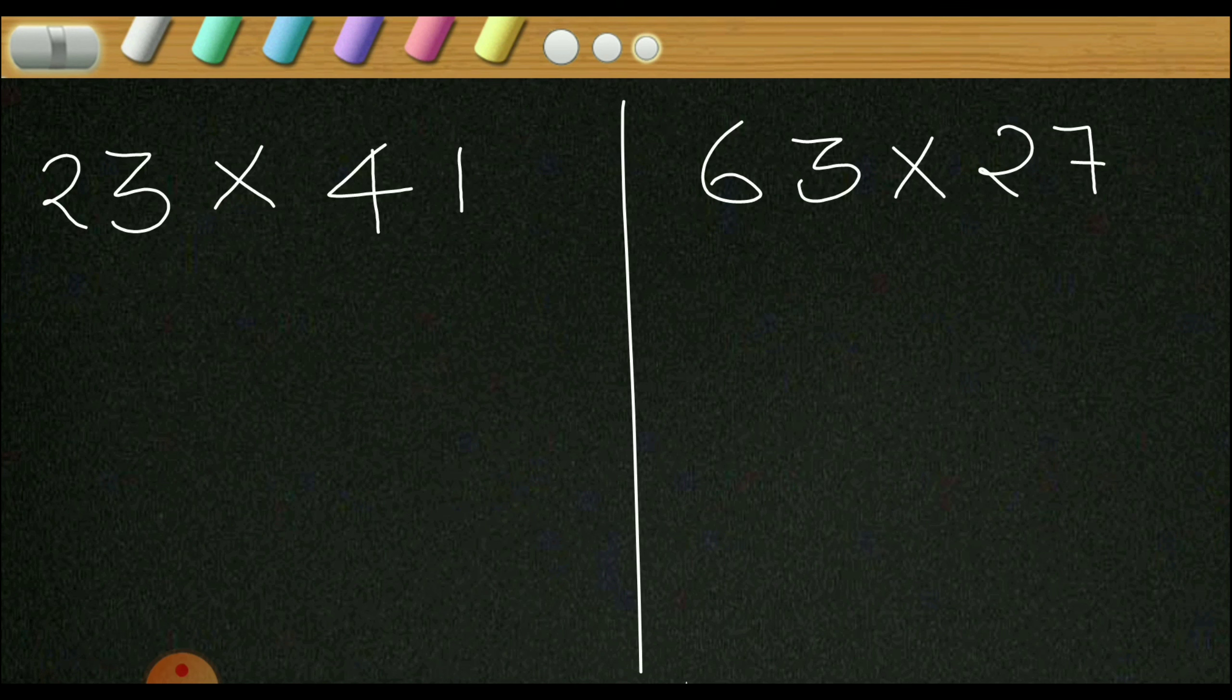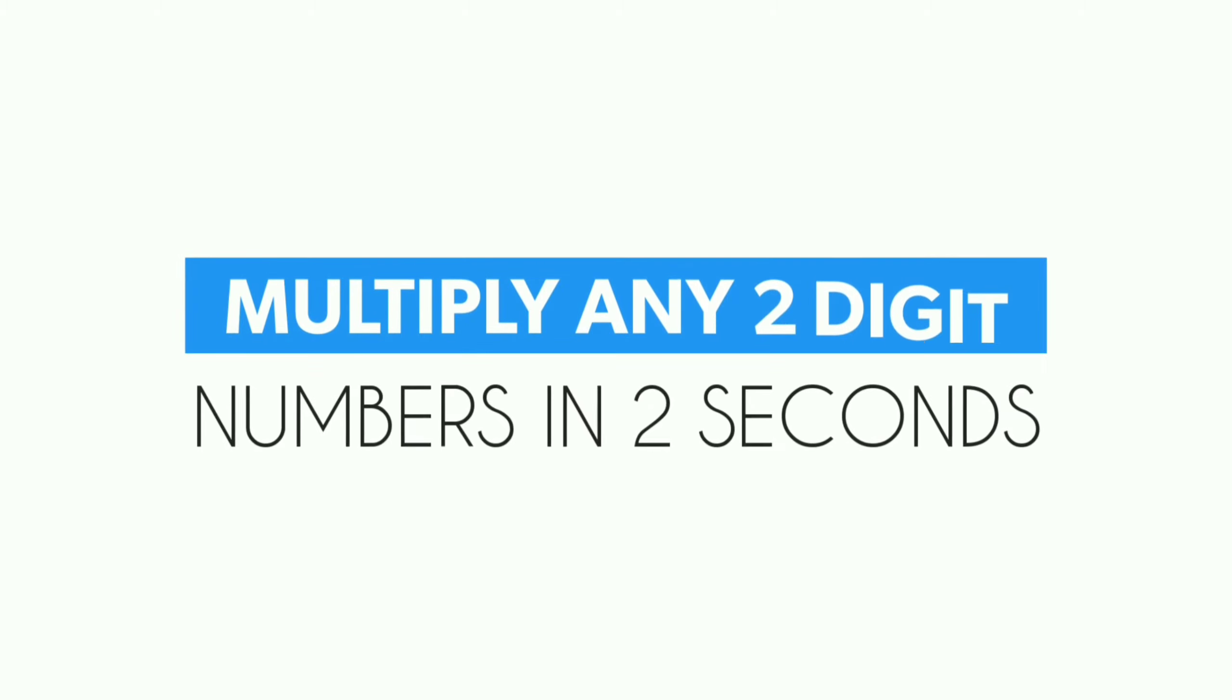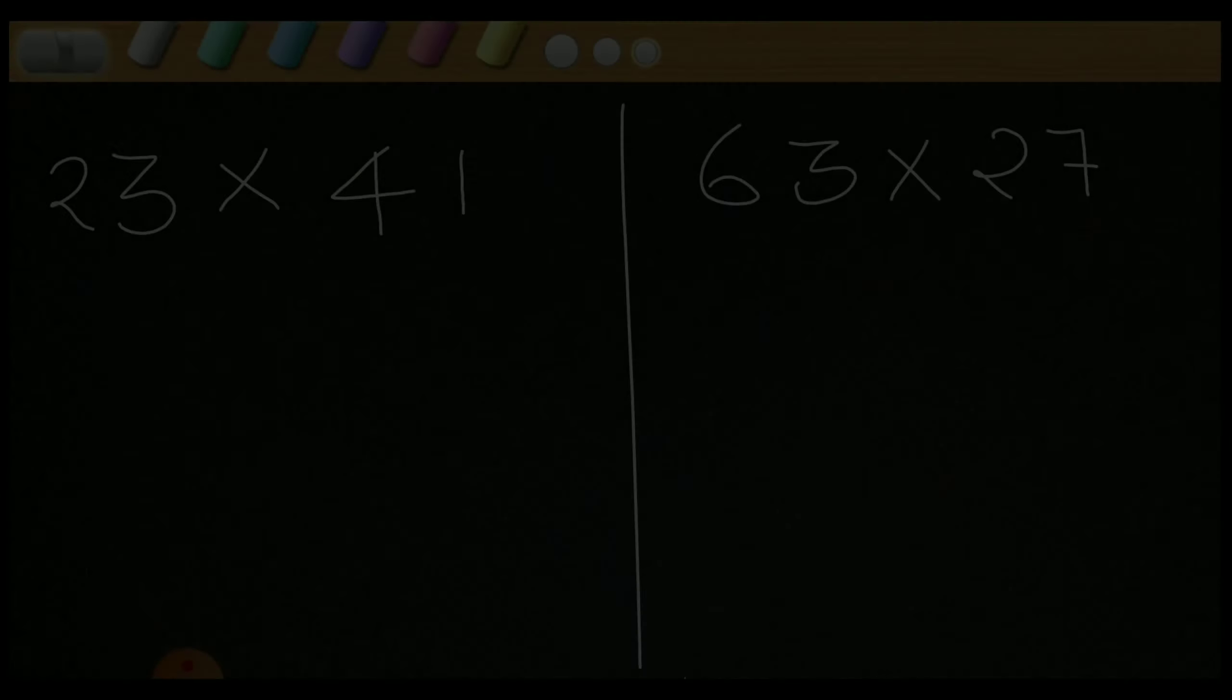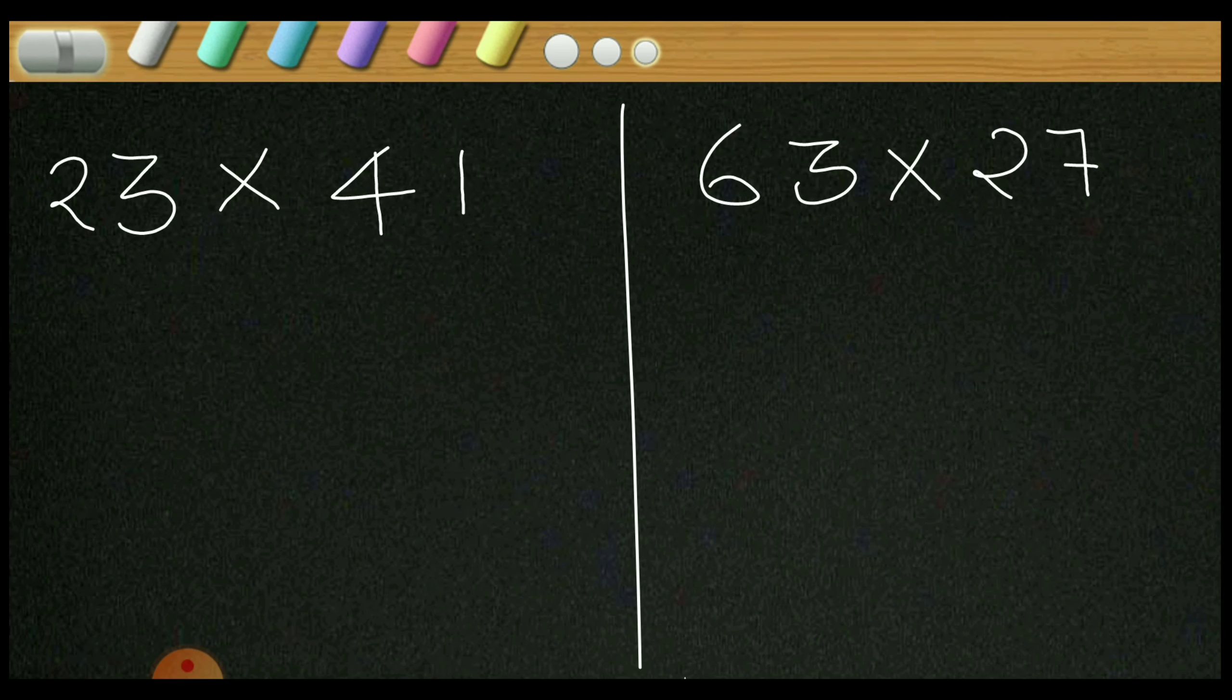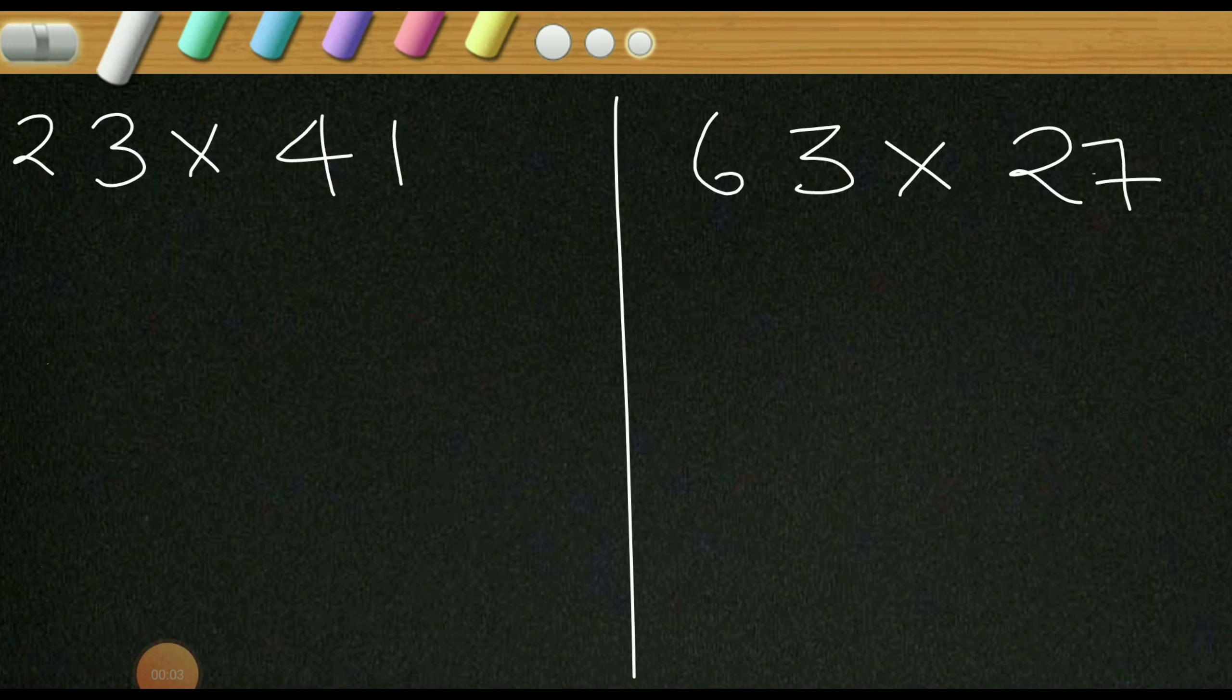Hi friends, today in this session we are going to see how to multiply any two digit numbers in just two seconds. So here I have taken two examples: one is 23 into 41 and other is 63 into 27.